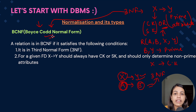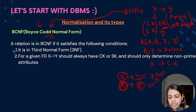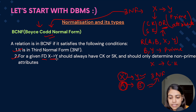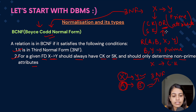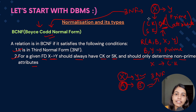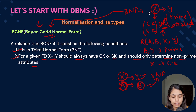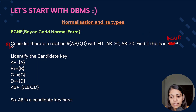Because of that, Boyce-Codd Normal Form was introduced to add refinement to Third Normal Form. According to BCNF, a relation should first be in Third Normal Form, and second, for a given functional dependency X determines Y, X should always be a candidate key or super key and should only determine non-prime attributes. So BCNF removes the 'or' condition — the determinant should always be a candidate key or super key, so that data redundancy is reduced.